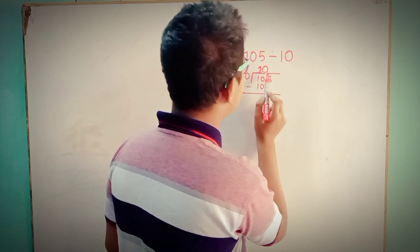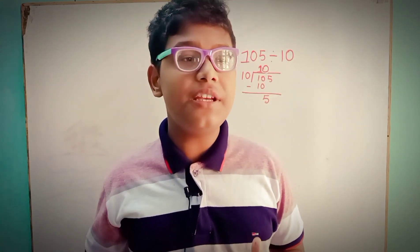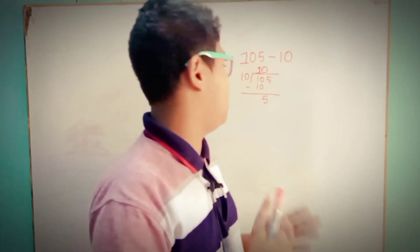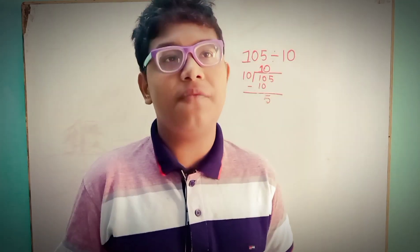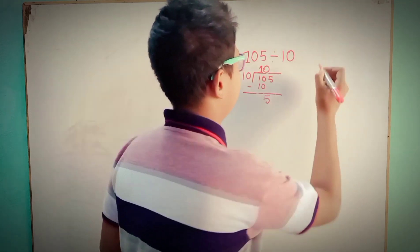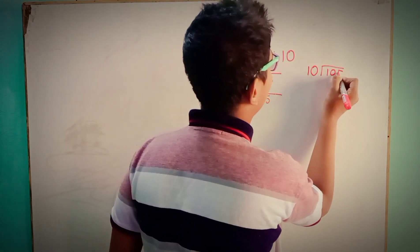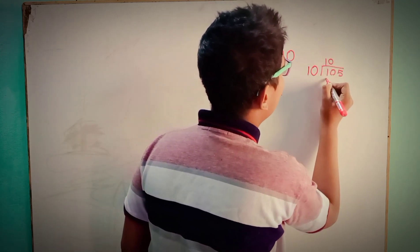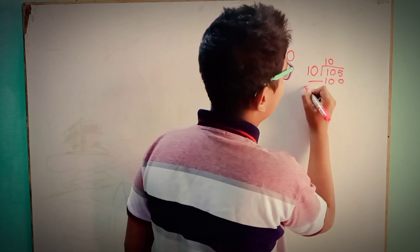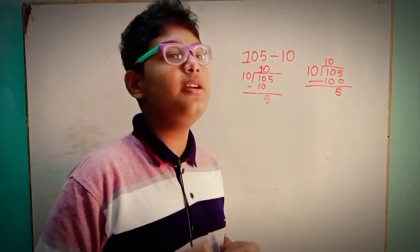The quotient is 10 and the remainder is 5. The question is: why should you put 0 on top? You may say the divisor 10 goes 10 times into 105, giving remainder 5. Like, 10 times 10 equals 100, and 105 minus 100 equals 5. So 5 remains.